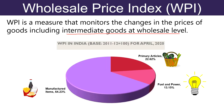Now we will look into the groupwise weight distribution for different series of Wholesale Price Index. This data is released by the Office of Economic Advisor, Department for Promotion of Industry and Internal Trade. It is released on the 14th of every month or the next working day with a time lag of 2 weeks of the reference month. Here primary articles are allotted weight of 22.62% which includes food articles, non-food articles, minerals, crude petroleum and natural gas. Next, Fuel and Petrol are allotted weight of 13.15% which includes electricity, mineral oil and coal.